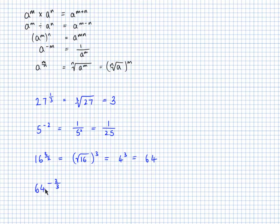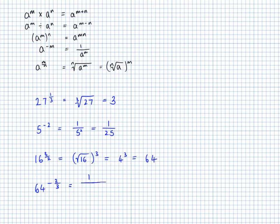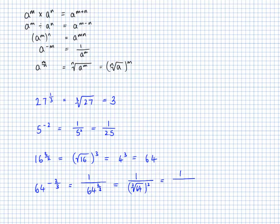This last one: 64 to the power of negative 2 thirds. That's a combination of both rules. The negative power tells me to take the reciprocal, so I'll have 1 over 64 to the power of 2 thirds. Then I cube root 64 to get 4, and square it to get 16. So the answer is 1 over 16.